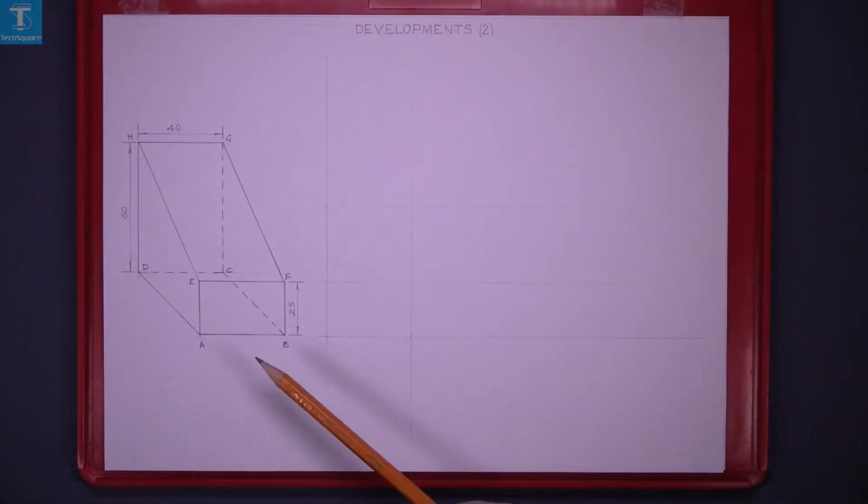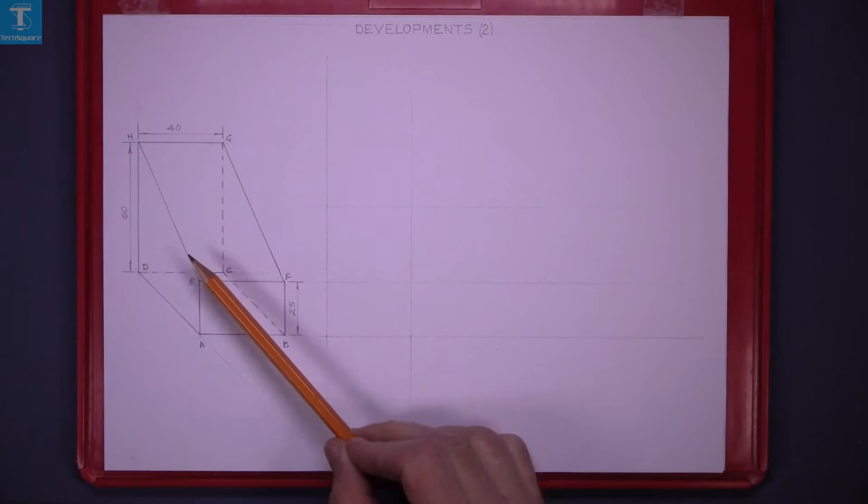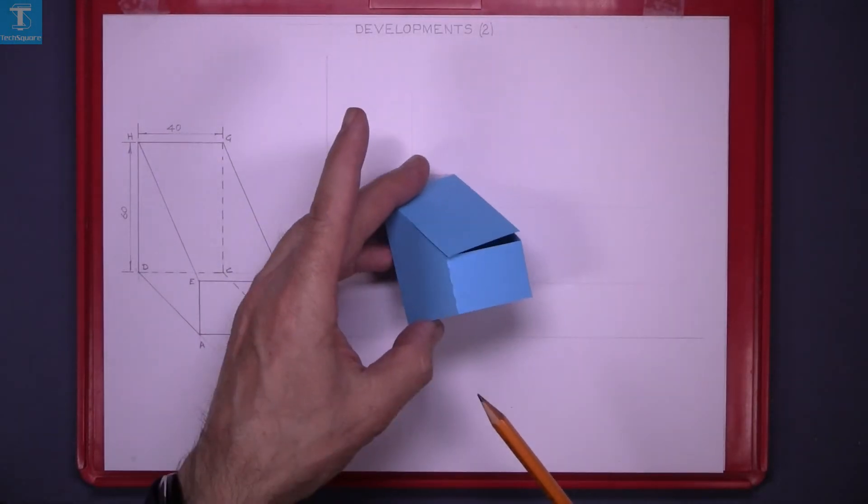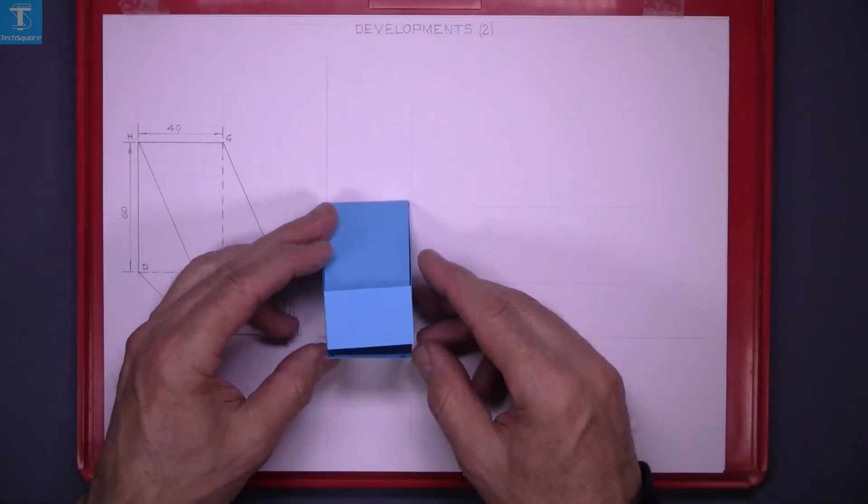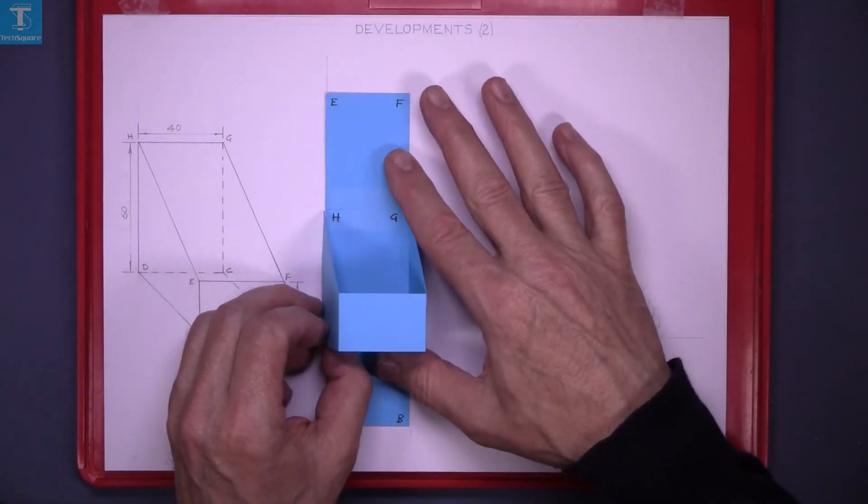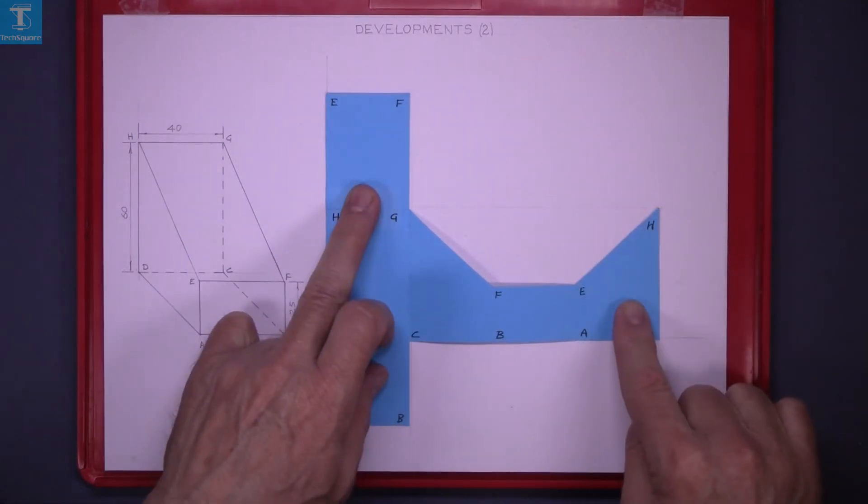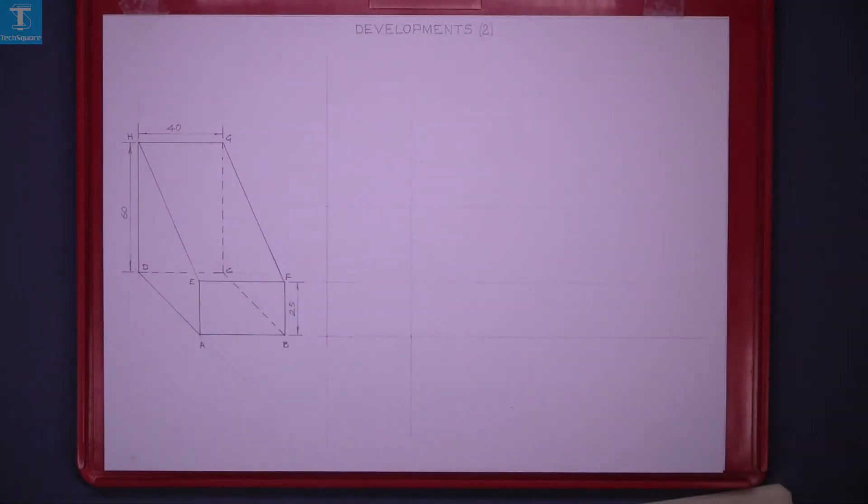Developments. Here is the oblique drawing of this object we're asked to draw the development of it. We're going to fold down the bottom and fold up the top and roll out the other three sides.